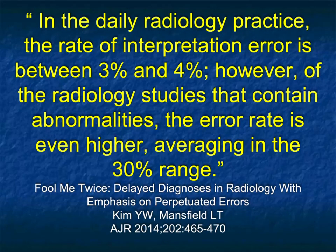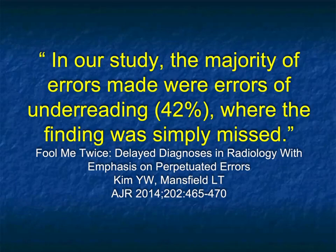If you ask how often mistakes occur, in daily practice the rate of interpretation error is between three and four percent. However, for studies that contain abnormalities, the error rate may be 30%. Remember, with pancreatic cancer, a lesion two centimeters or less will be missed between 30 and 40% of the time — in retrospect it's there, but a high miss rate. The majority of errors were under-reading: we simply missed the finding.